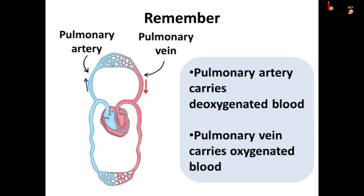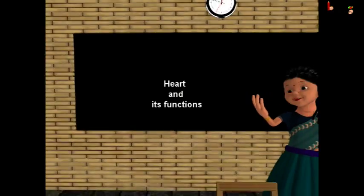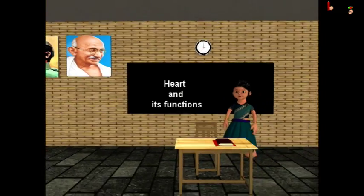The pulmonary vein carries pure blood back to the heart from the lungs. In 1628, an English physician named William Harvey first described how blood circulation occurs in our body. So that was all about the heart and its functioning.